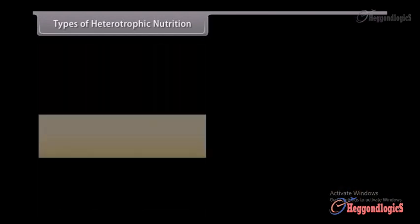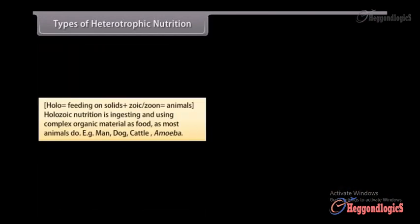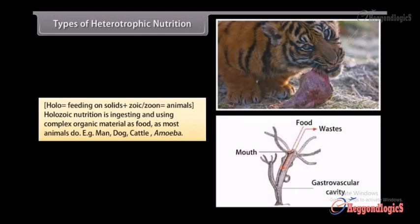Holo, feeding on solids, and zoic, zoon means animals. Holozoic nutrition is ingesting and using complex organic material as food as most animals do. Examples include man, dog, cattle, and amoeba.